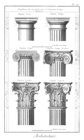Cinquecento style: style which became prevalent in Italy in the century following 1500, now usually called 16th century work. It was the result of the revival of classic architecture known as Renaissance, though the change had commenced already a century earlier in the works of Ghiberti and Donatello in sculpture, and of Brunelleschi and Alberti in architecture.